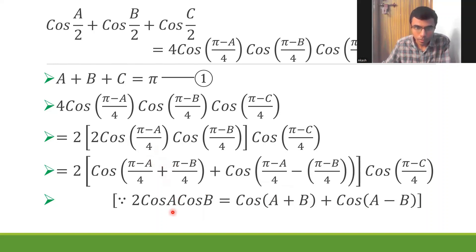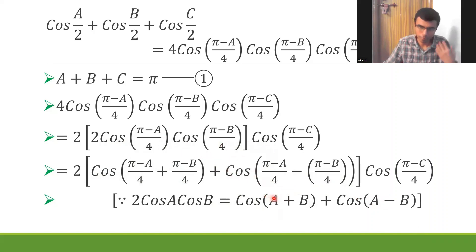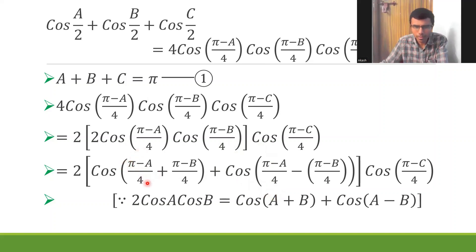In this formula, in place of A there is (π−A)/4 and in place of B there is (π−B)/4. So applying 2 cosA cosB = cos(A+B) + cos(A−B), I get cos of [(π−A)/4 + (π−B)/4] plus cos of [(π−A)/4 − (π−B)/4]. This is just the formula applied with those specific substitutions.